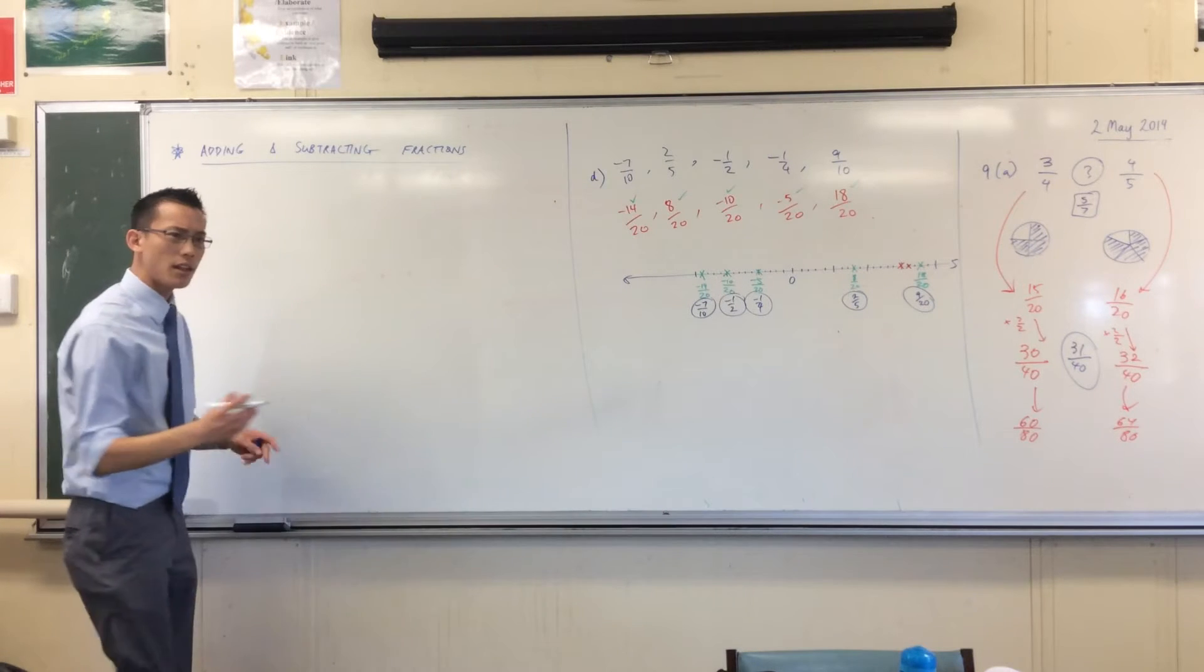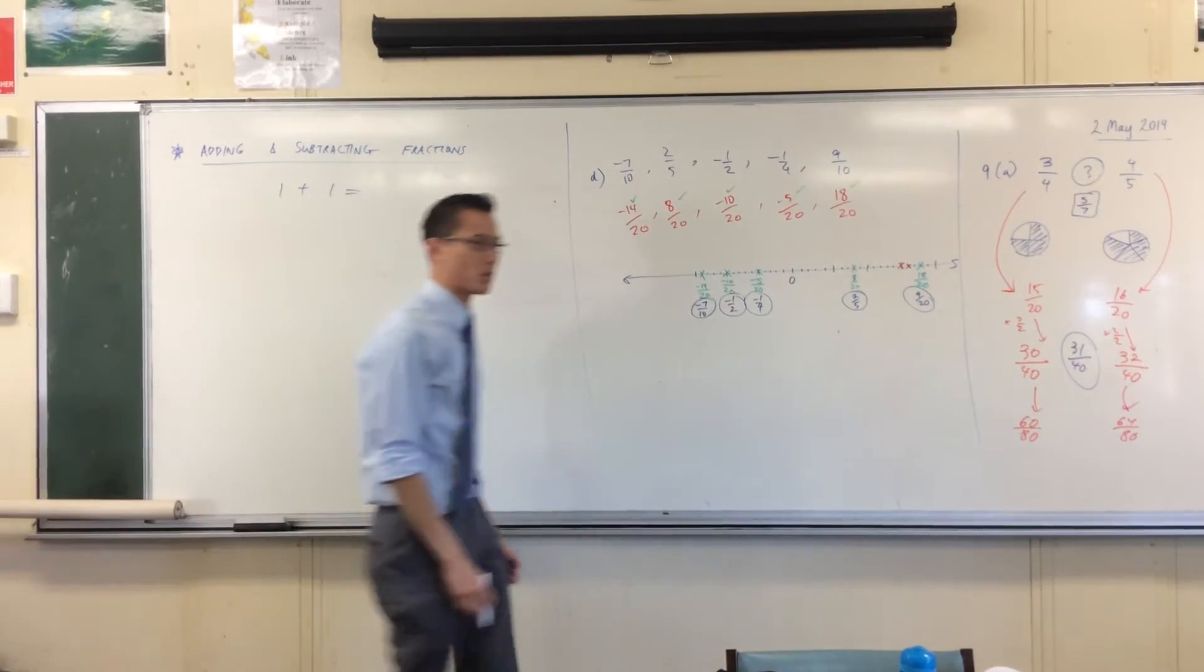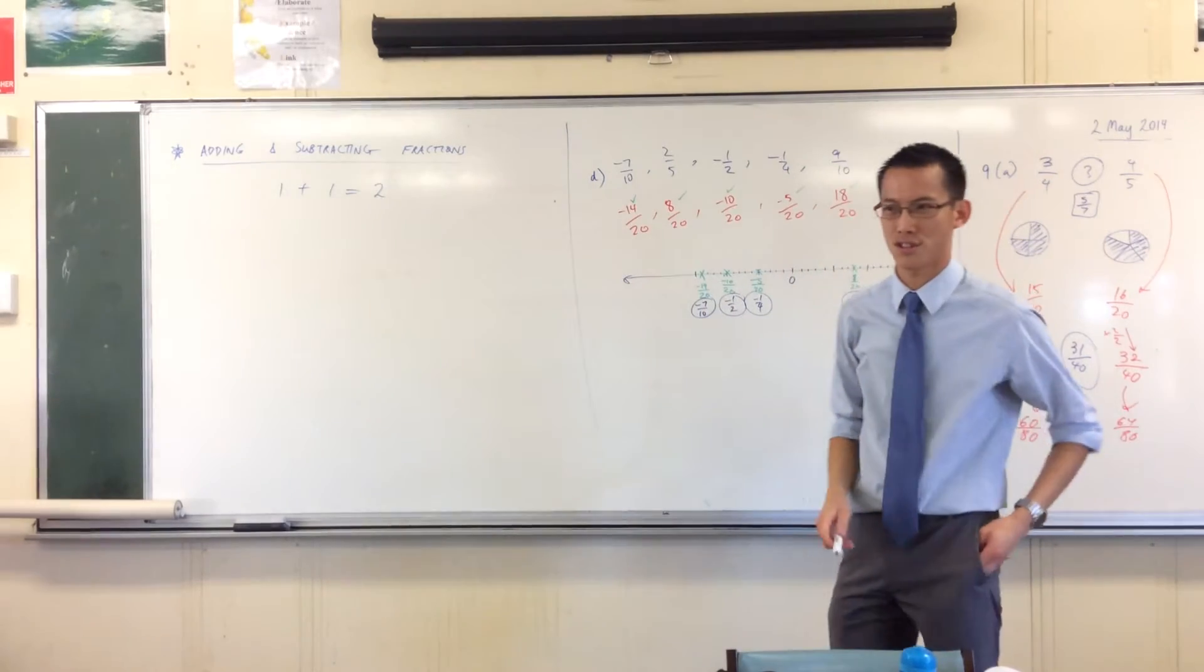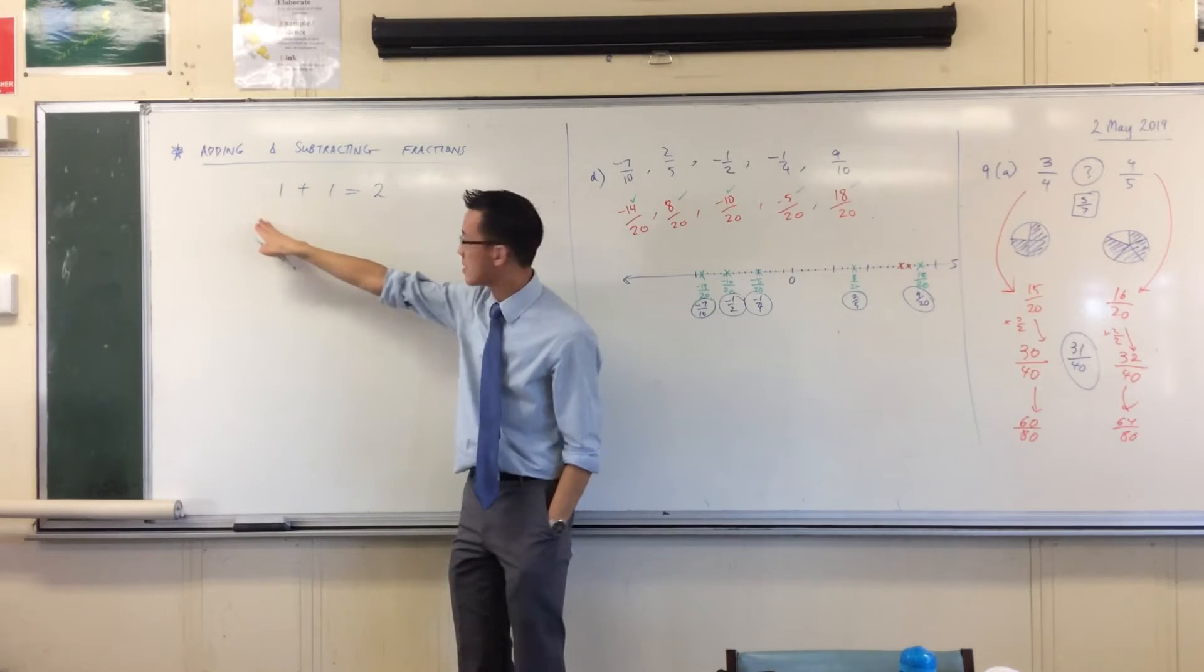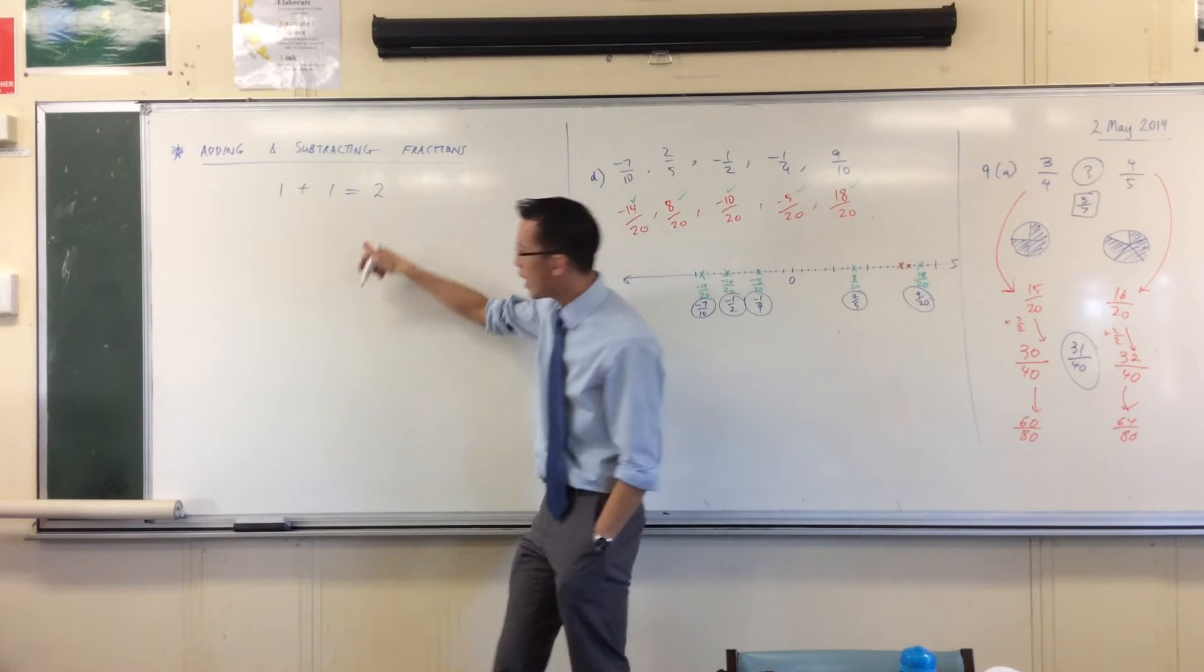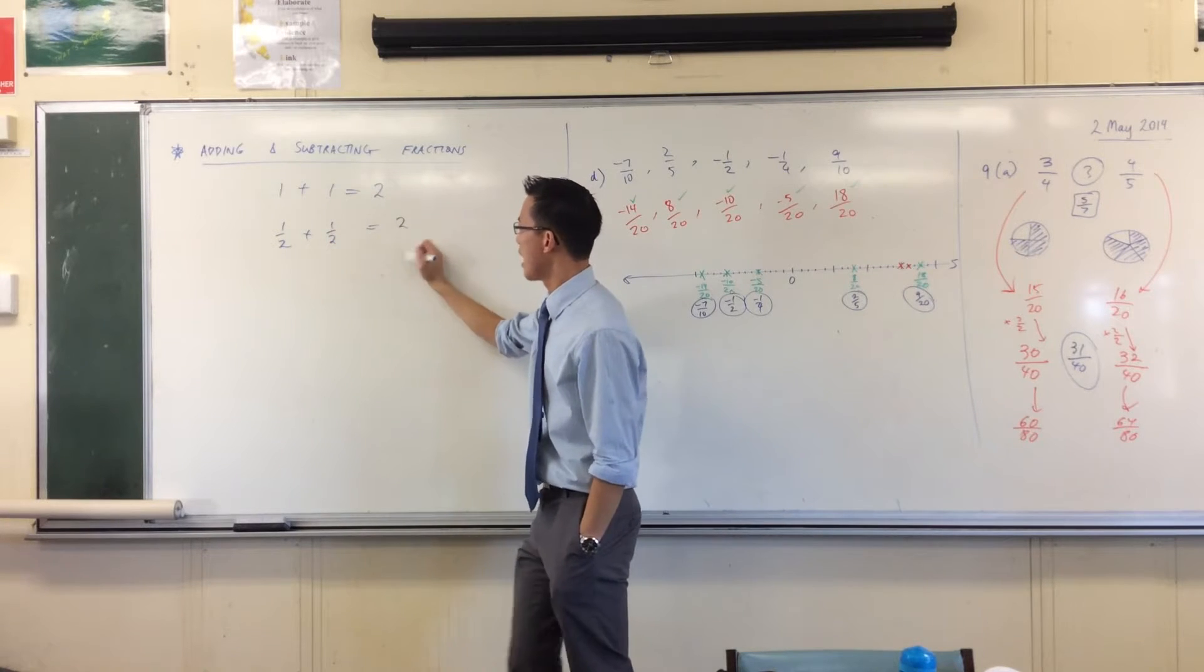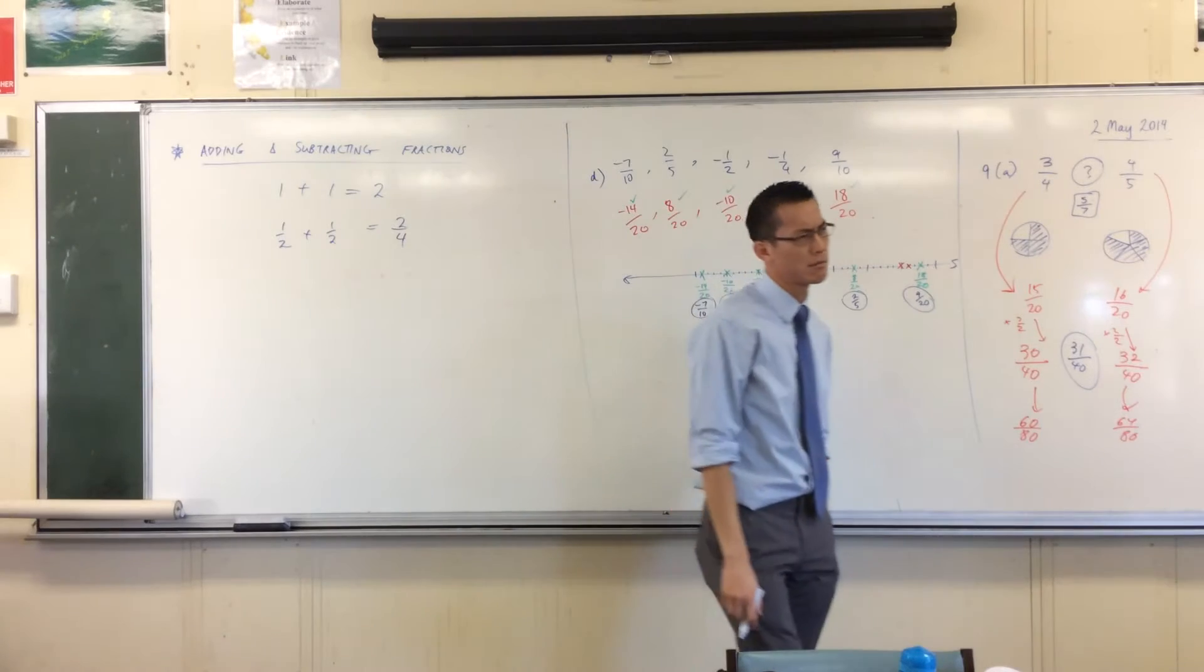Now, I have a question for you. 1 plus 1 - this equals 2. Now, I look at this and I see this number and this number go together. Well, if I have fractions, I see this number and this number go together, and I see this number and this number that go together. That's not right.